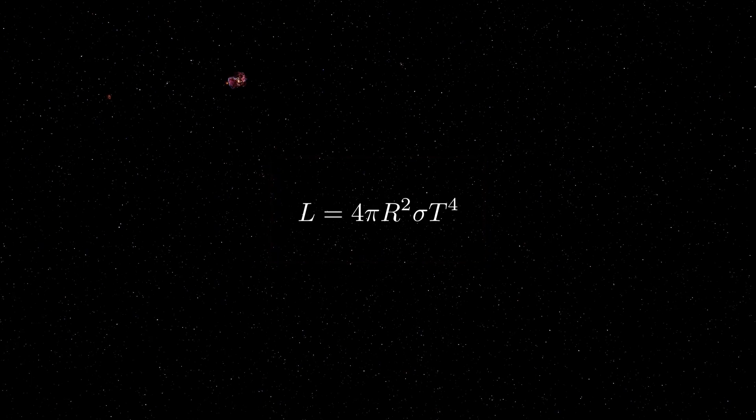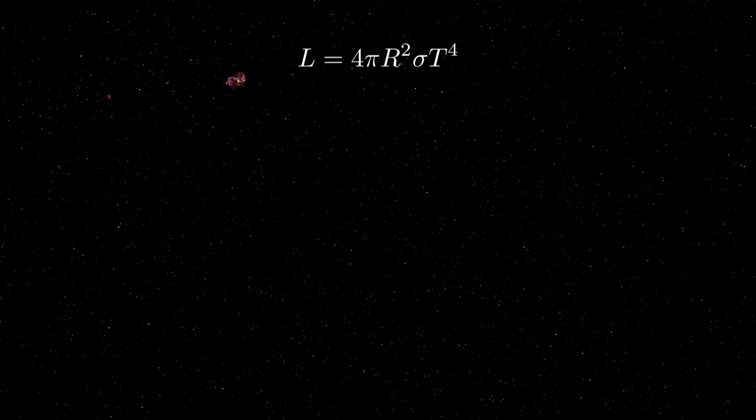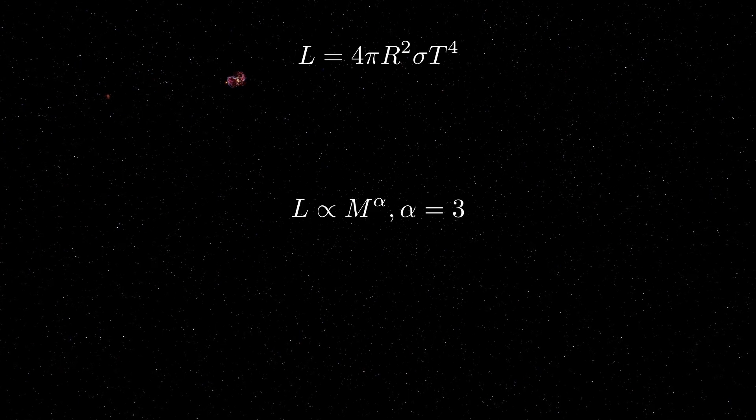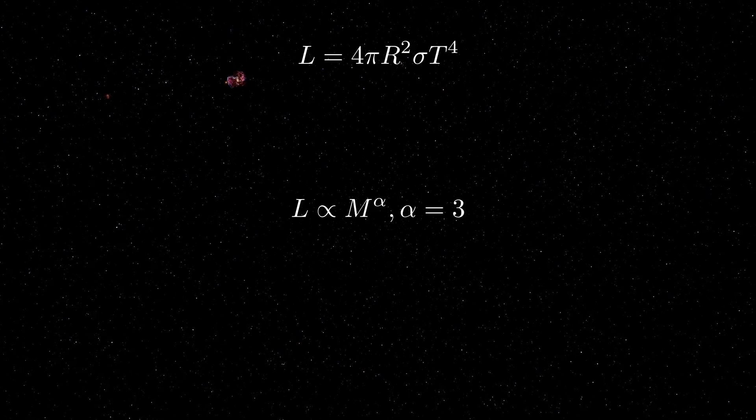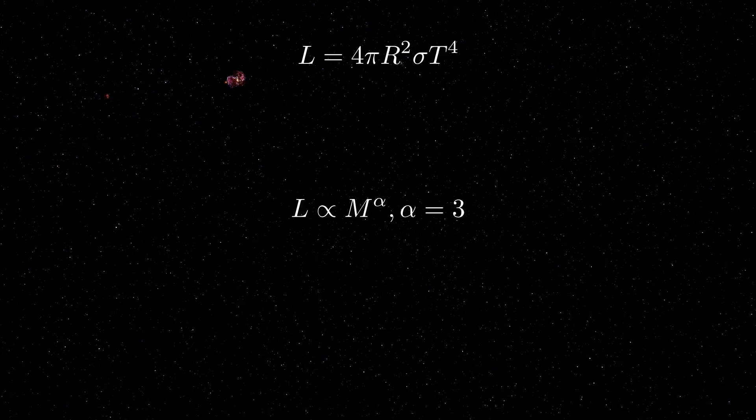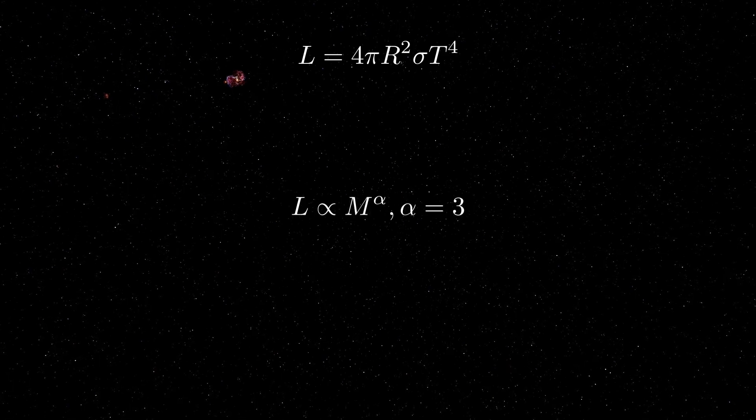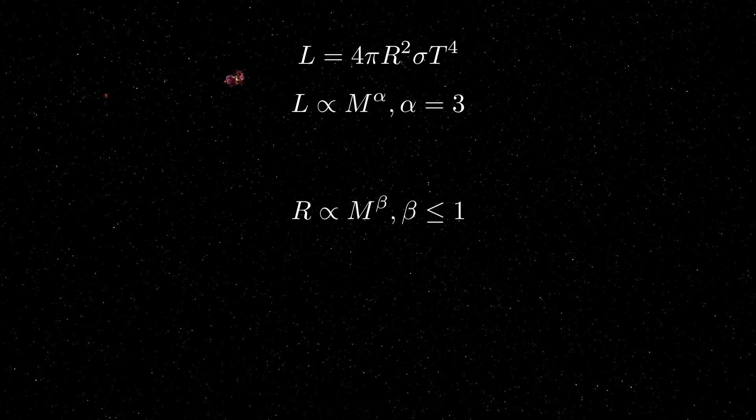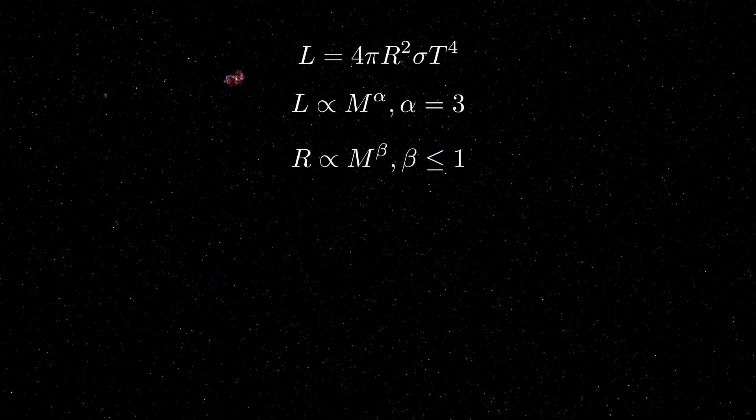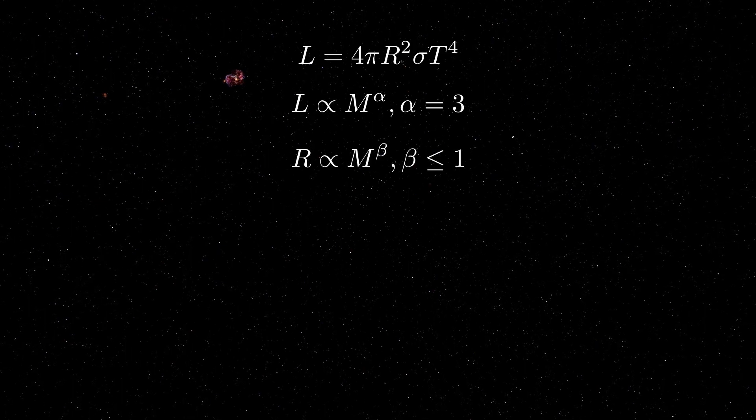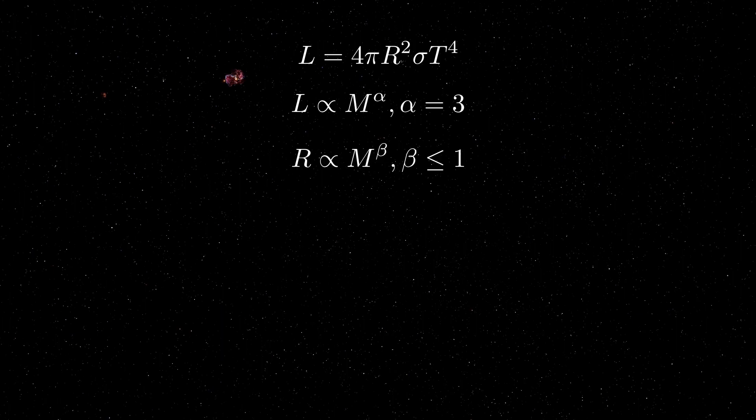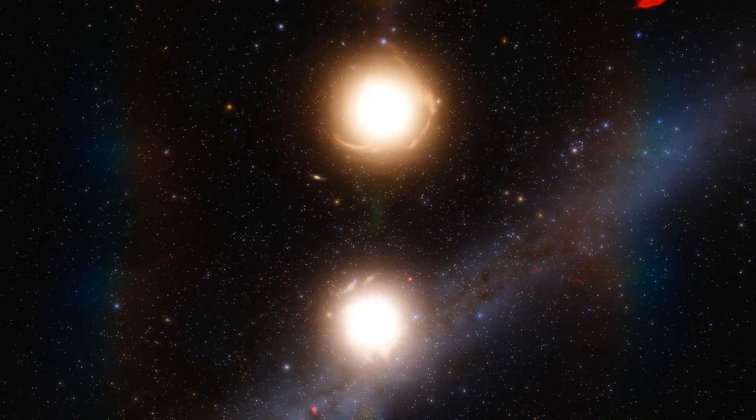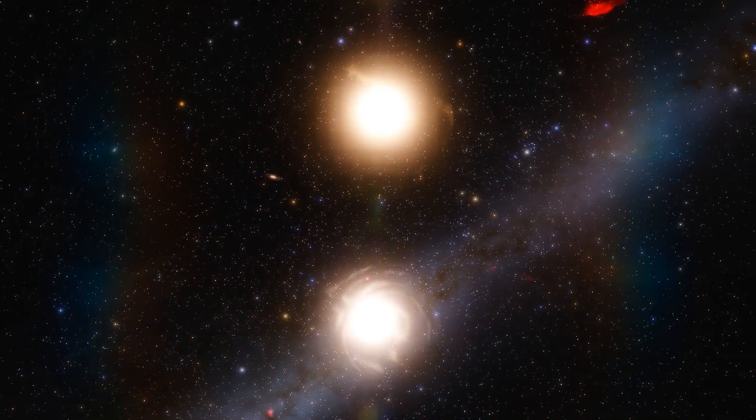There is also a mass-luminosity law, from which the dependence of luminosity on mass can be expressed as L proportional to m to the power of alpha, where alpha equals 3. However, for real stars, alpha can vary from 1 to 5 in different mass ranges. The relationship between mass and radius is often described by a similar ratio r proportional to the mass to the power of beta, where beta takes a value of no more than 1 in different mass ranges. In any case, all four parameters turn out to be closely related.